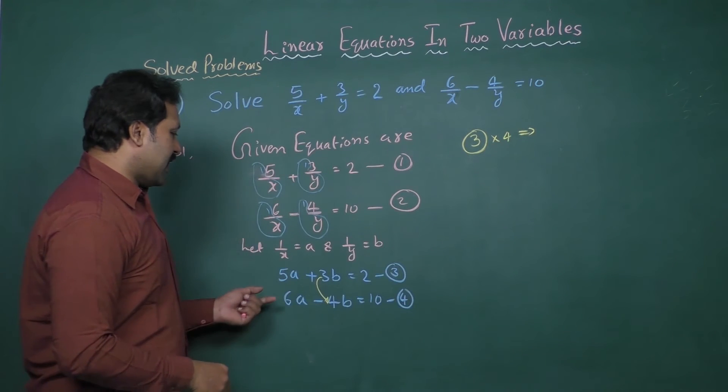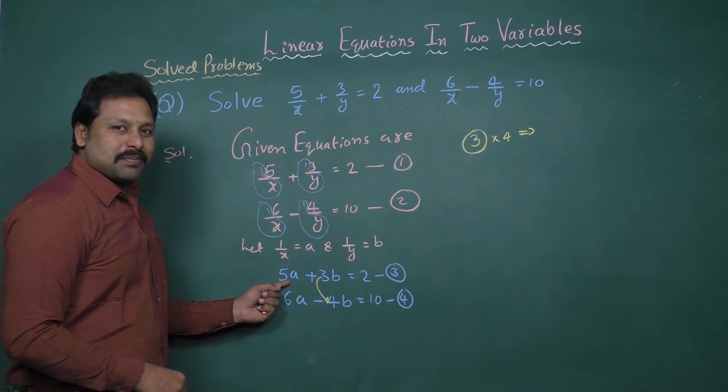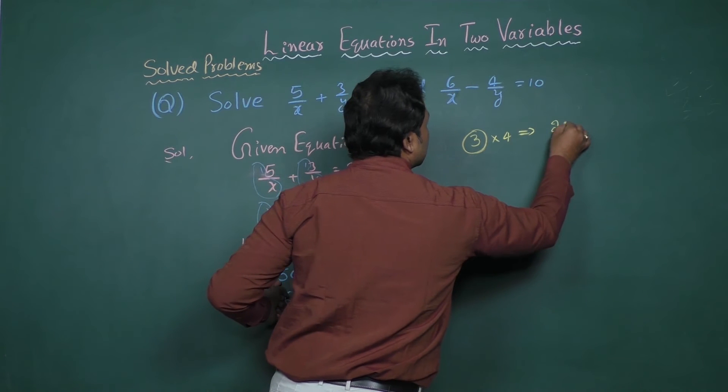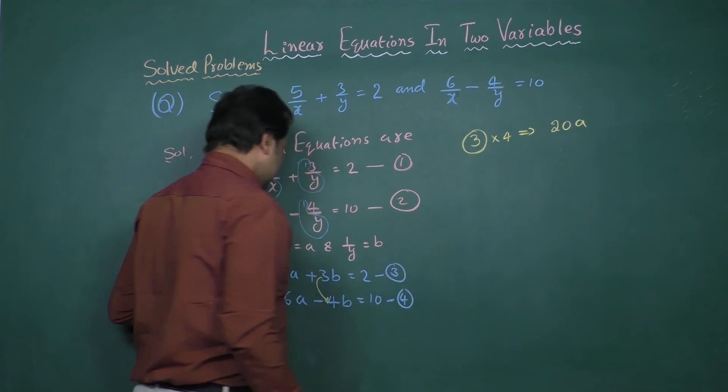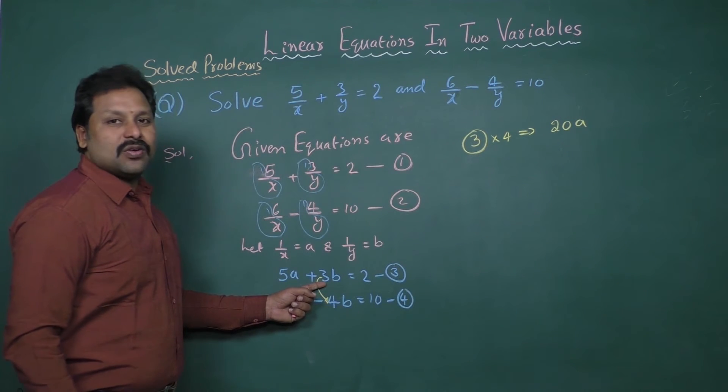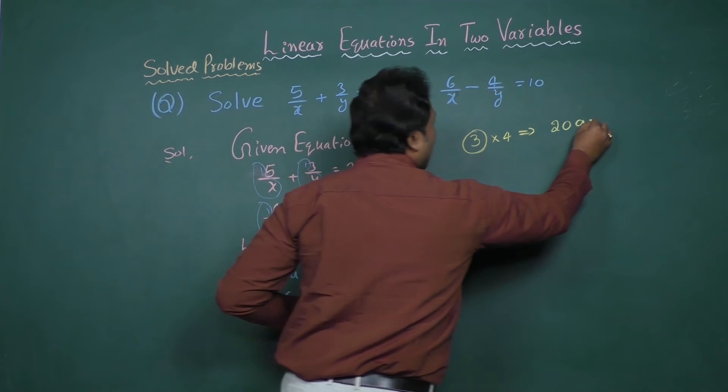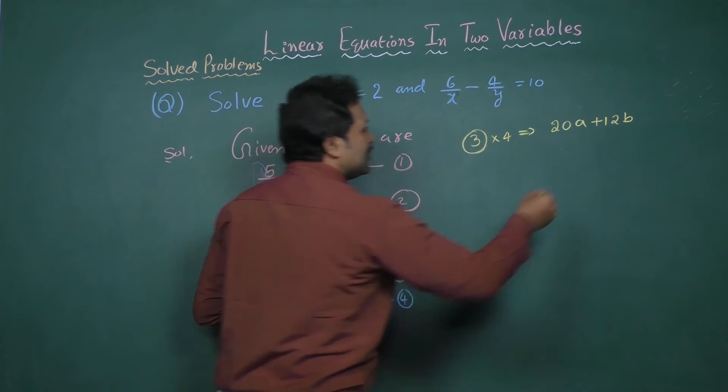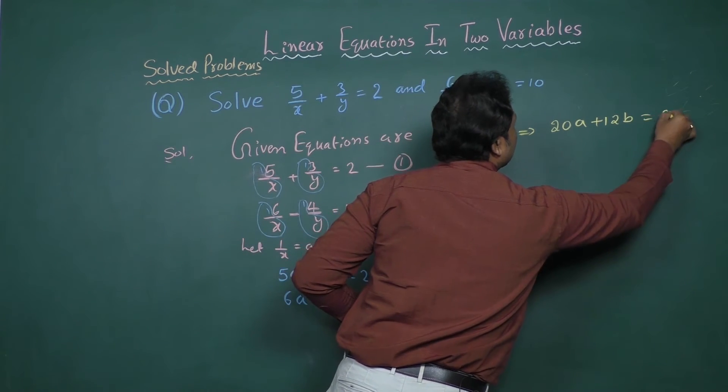Now, multiply equation 3 by 4. 5 into 4 gives 20a plus 4 times 3 is 12b equal to 4 times 2 is 8.